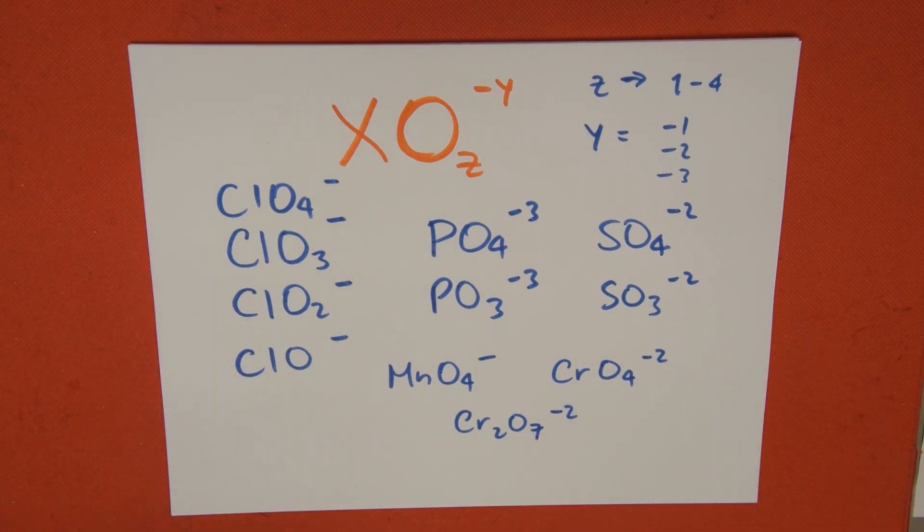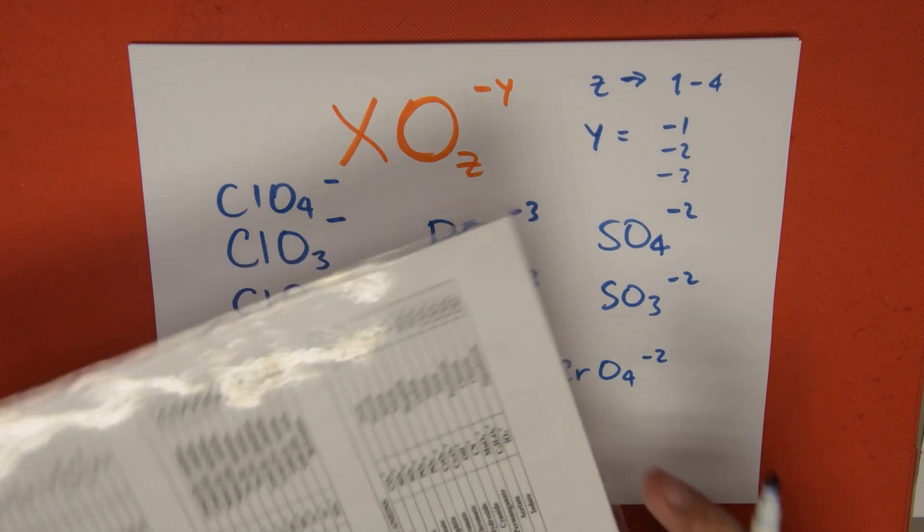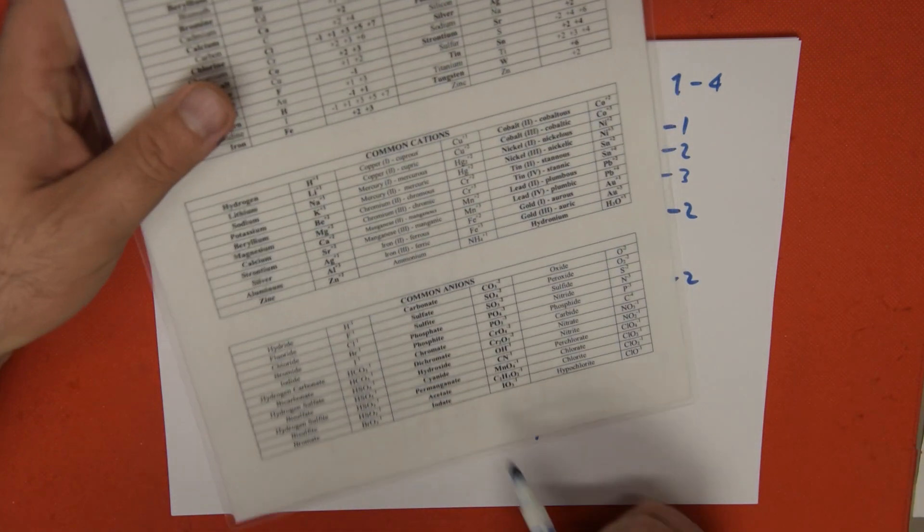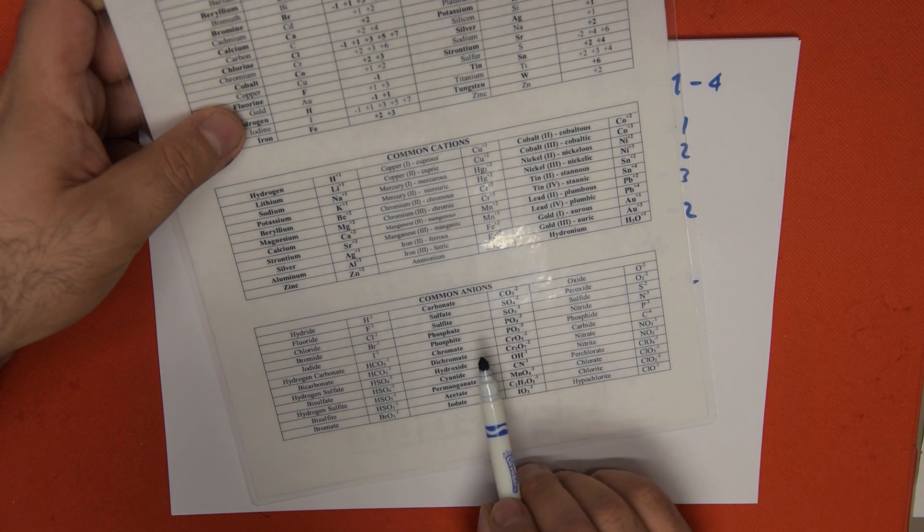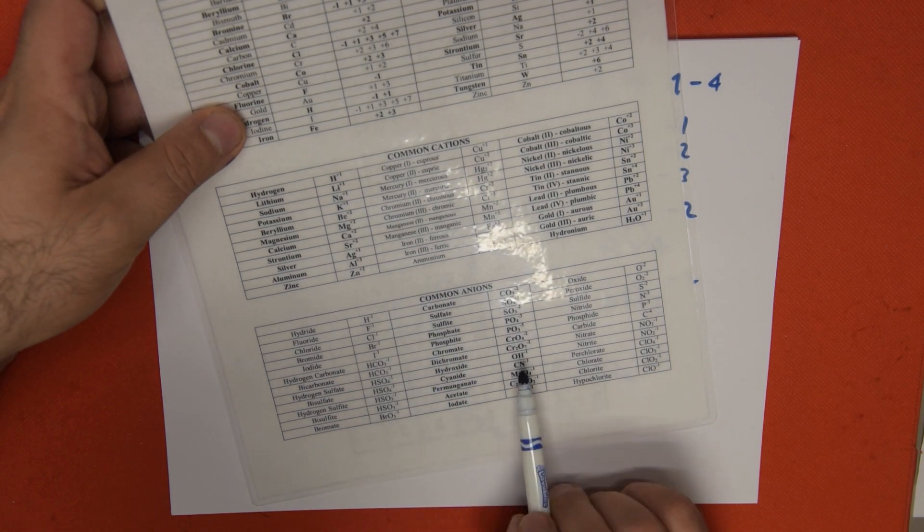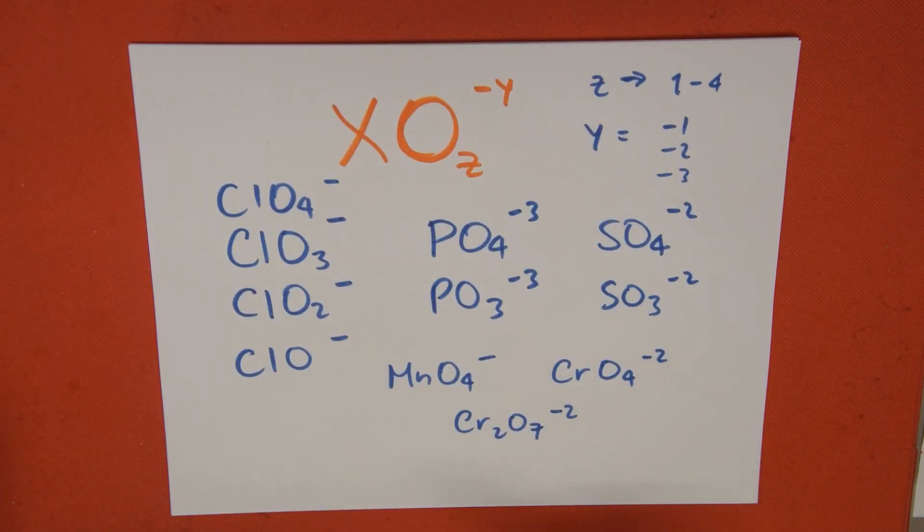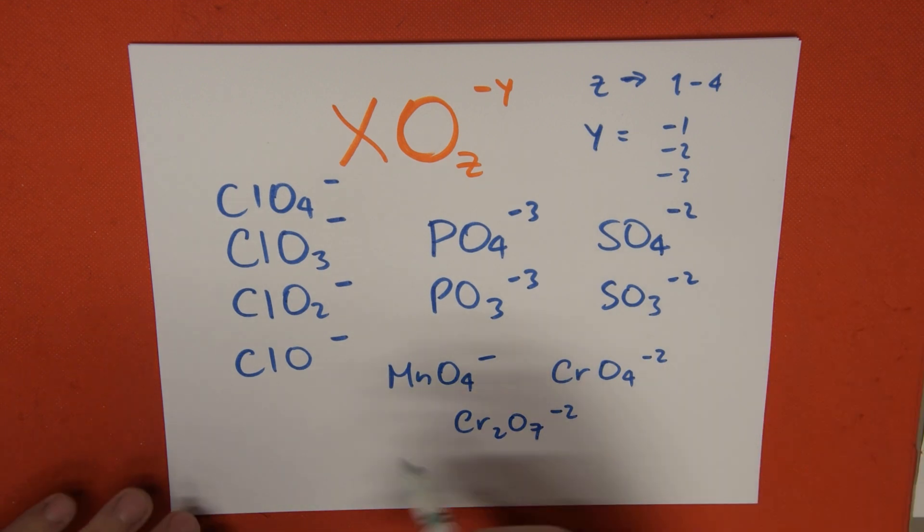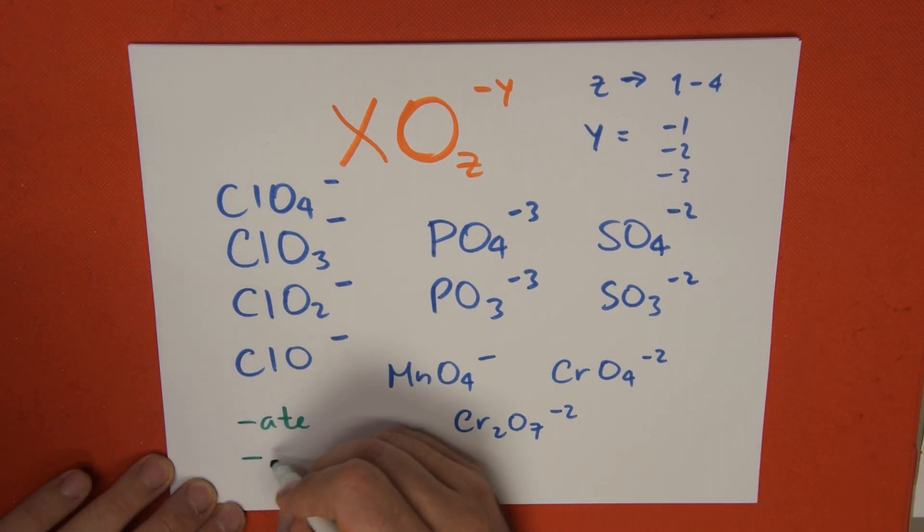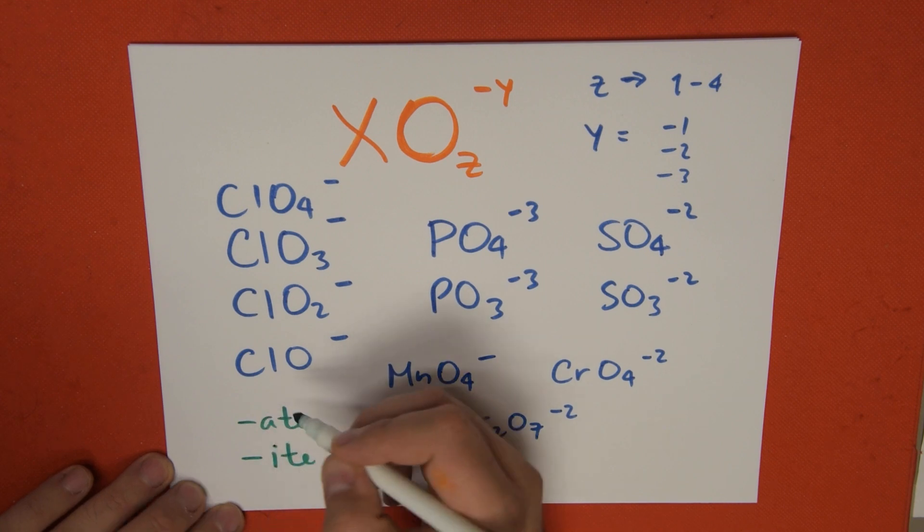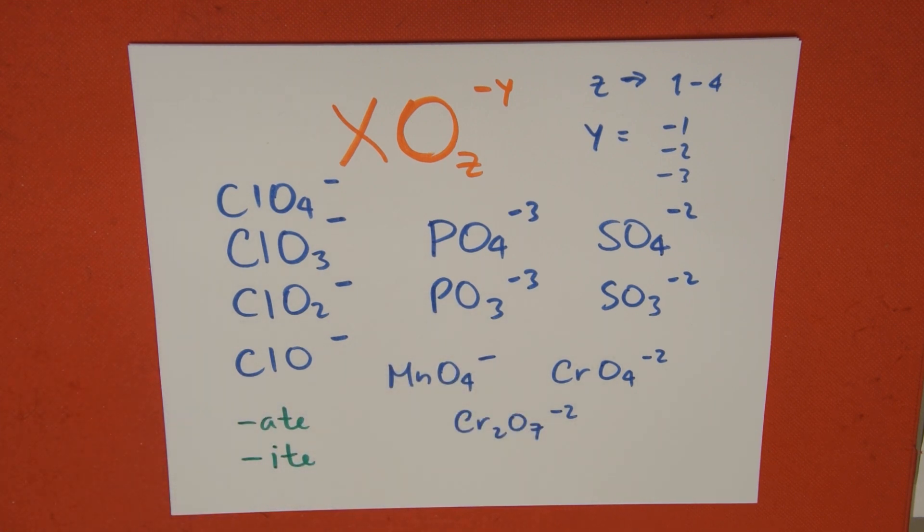How am I doing this? Chemistry teachers don't expect you to memorize all of this. You can always use a chart. It's important to know how to use a chart. Here we have a chart with common anions, and some of them have oxygen in them, so they're actually oxyanions. And what are some of their names? All of them end in either -ate or -ite.